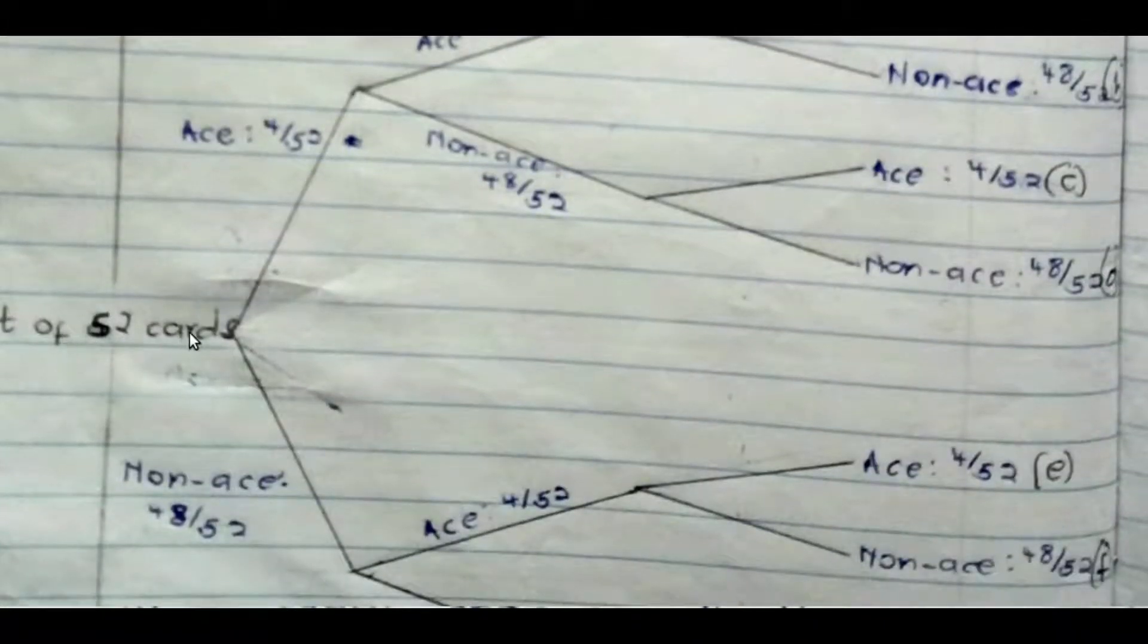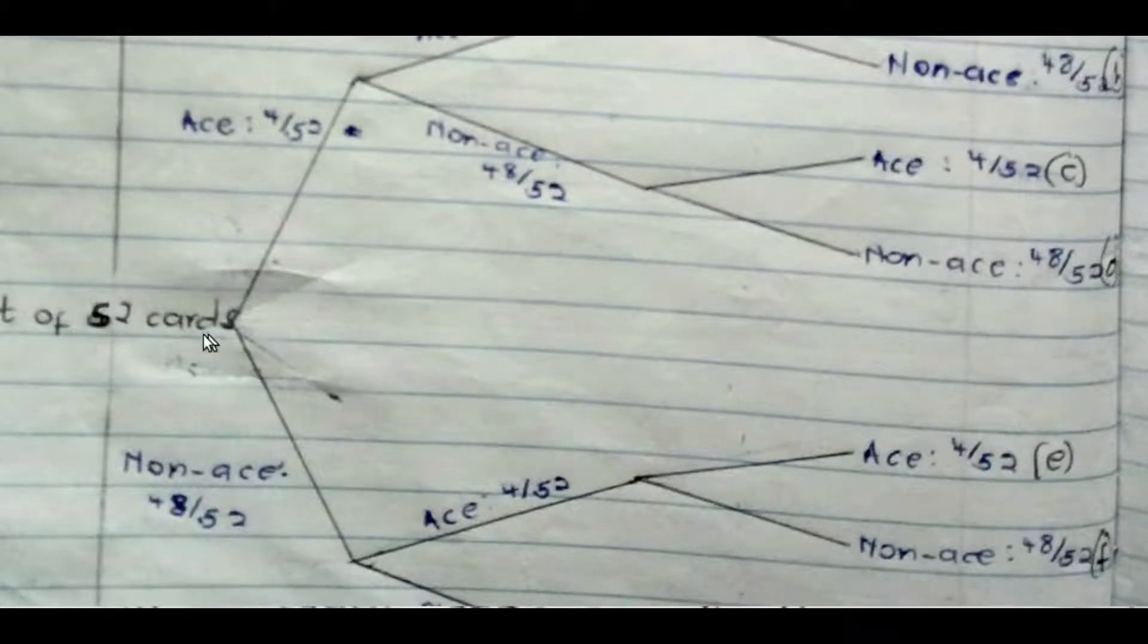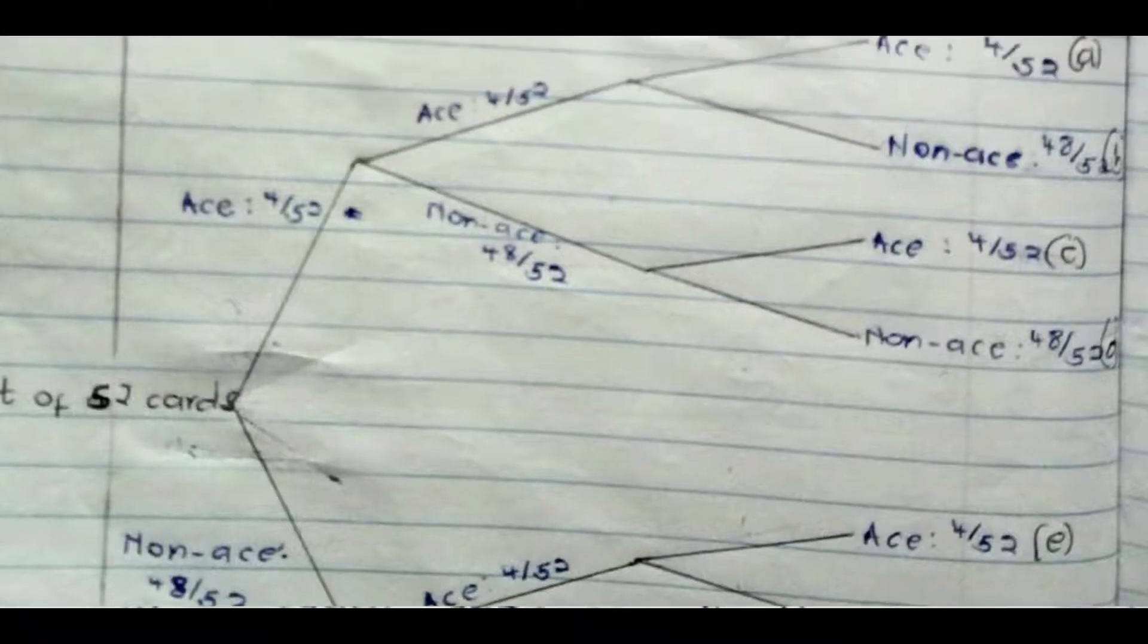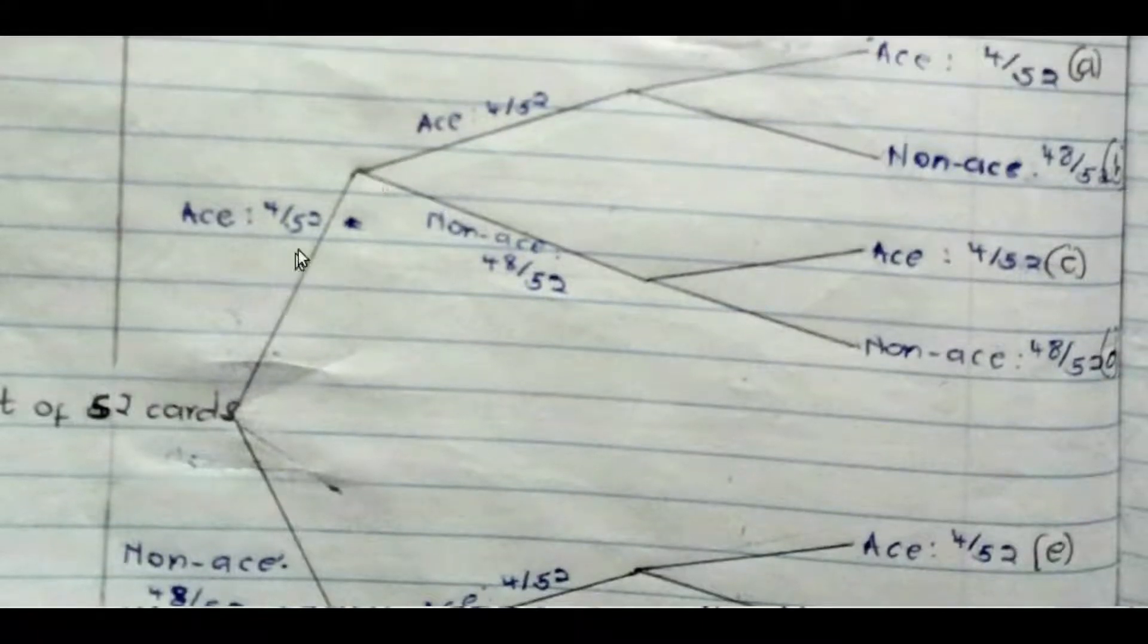So, we have 52 cards here. If we pick an ace, this is the probability: four over 52. If we don't pick it, it means we follow this route of missing. So, the first chance is this. We either pick it or don't pick it. If we picked it, then we go to the second chance. There is also a possibility of not picking it after replacing, of course. Picking or not picking.